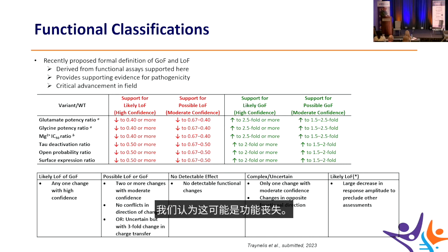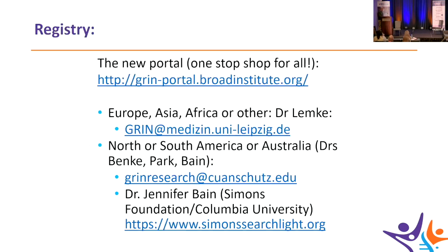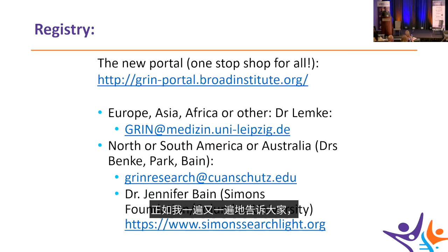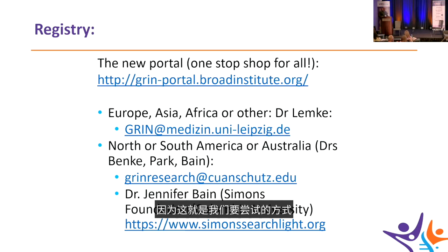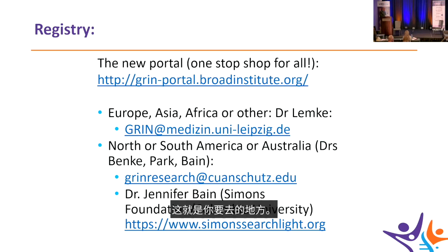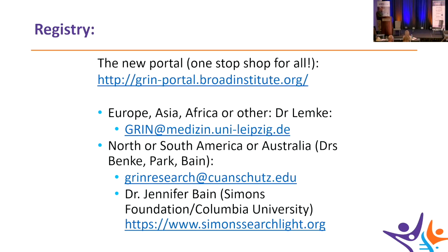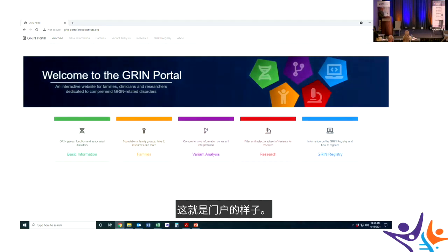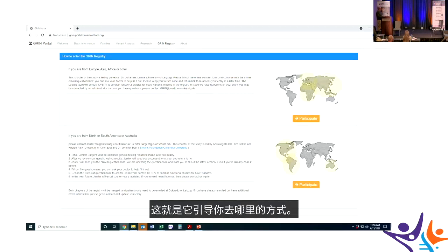A special 'likely loss of function with star' category flags variants so difficult to express in expression systems that loss of function is inferred. Families are urged to join registries if they haven't already. There is a one-stop shop via the GRIN portal, directing European, Asian, and African families to Johannes's group and North/South American and Australian families elsewhere.